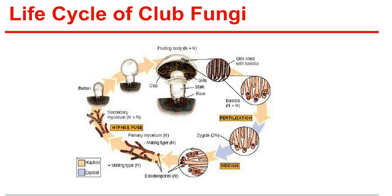Life cycle of club fungi: a basidiospore germinates to produce a haploid primary mycelium, which begins to grow. The mycelia of different mating types fuse to produce a secondary mycelium, whose cells contain haploid nuclei of each mating type. The secondary mycelia may grow in the soil for years, reaching an enormous size — a few have been found to be hundreds of meters across, making them perhaps the largest organisms in the world. The spore-producing bodies are then pushed above ground and grow by cell enlargement, not cell division, resulting in rapid growth — which is why mushrooms pop up overnight.